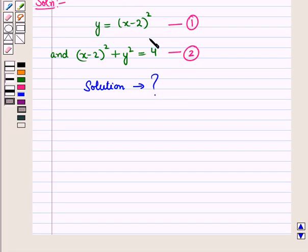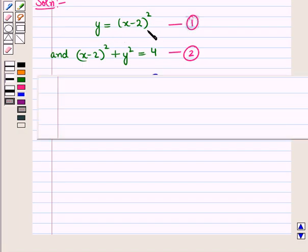Let us draw the graph of the two equations. Take the first equation. The first equation is of the form y equals x², which is the equation of an upward parabola.